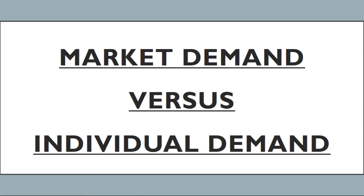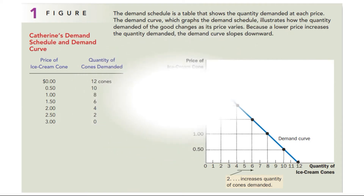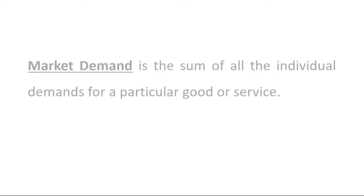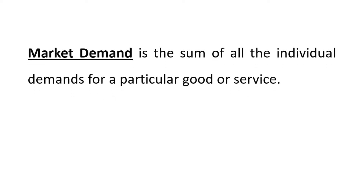Hello students. Today's topic is market demand versus individual demand. The demand curve in this figure shows an individual's demand for a product. However, to analyze how markets work we need to determine the market demand. Market demand is the sum of all the individual demands for a particular good or service.